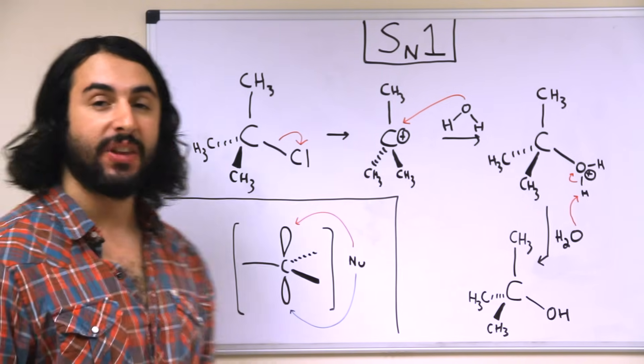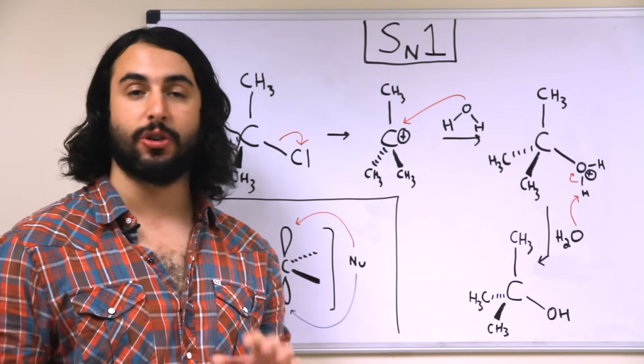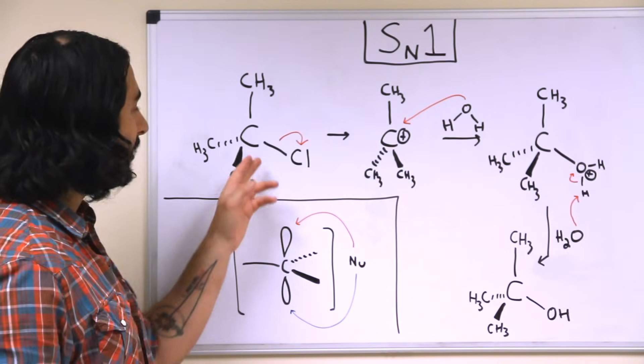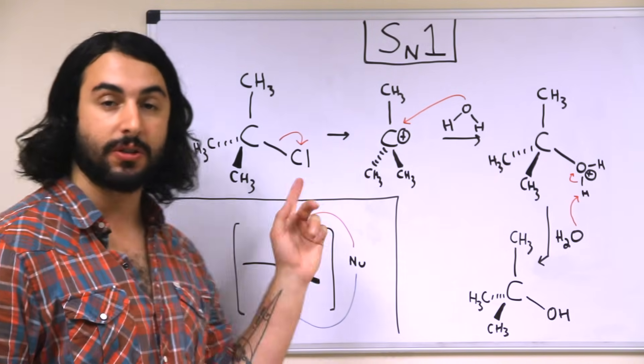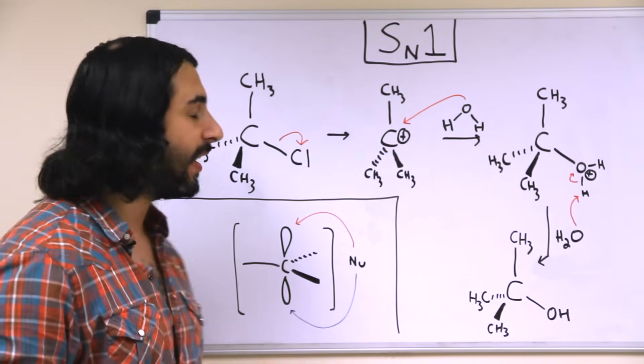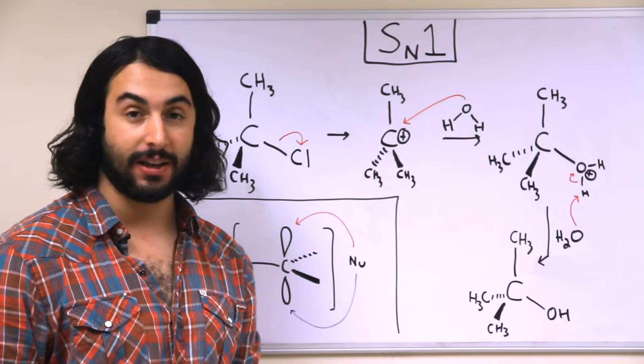So the first step is that the leaving group leaves. So this is prior to any contact with the nucleophile. This carbon is able to lose a bond to this chlorine. Chloride is very stable by itself, and we have a carbocation intermediate here.